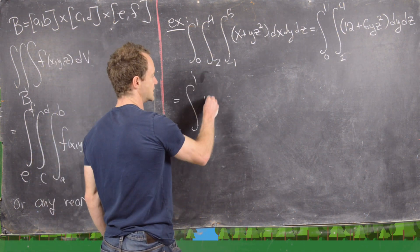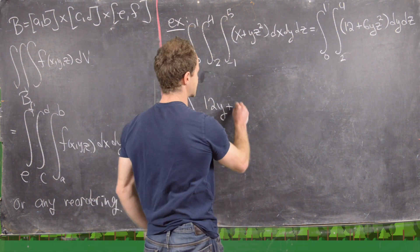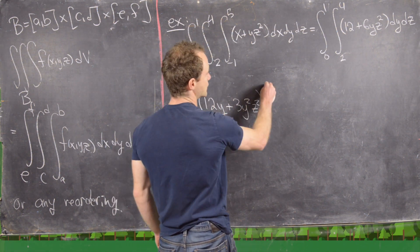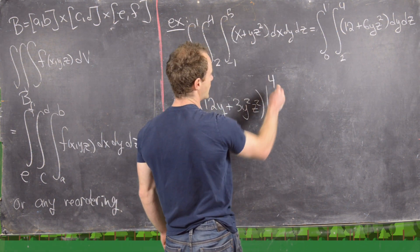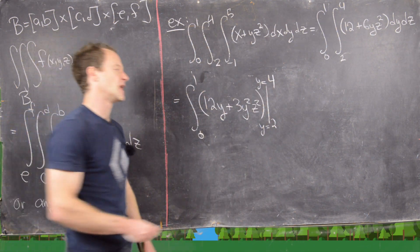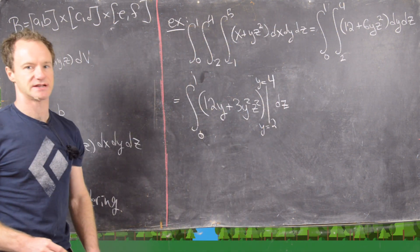So notice we still have a z integral on the outside, which is from 0 to 1. And then with respect to y, that's going to give us 12y plus, let's see, that's going to be 3y squared z squared. And now we need to evaluate that from 2 to 4. And just to remind ourselves, that's y equals 2 to y equals 4, and then this is all inside a dz integral.